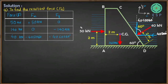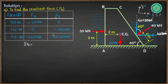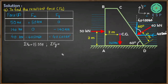With all forces resolved along x and y directions, we can now find the resultant. Summing x-components: ΣFx = +50 − 40 sin 60° = 15.359 kN. Summing y-components: ΣFy = −140 − 40 cos 60° = −160 kN.